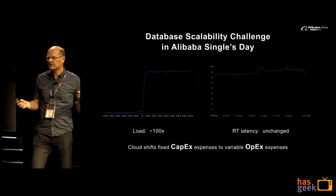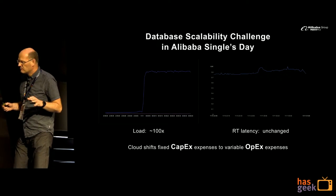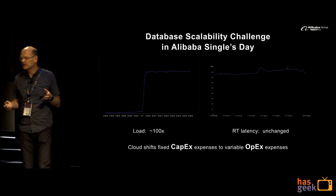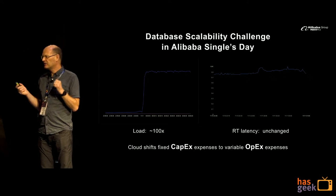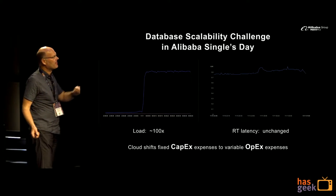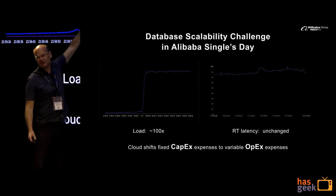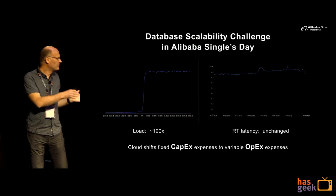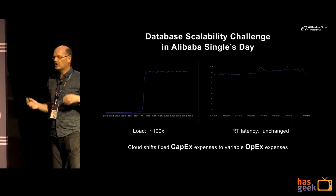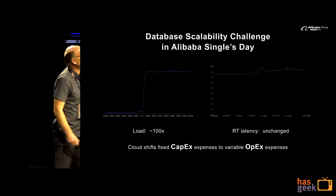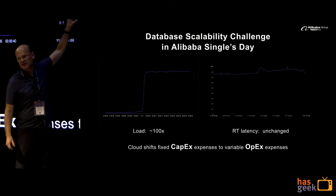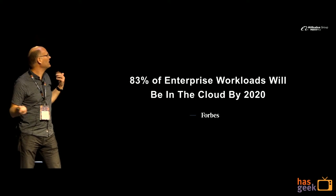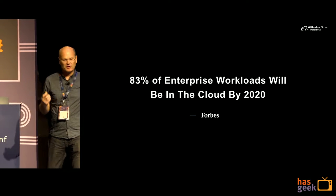One good thing about the cloud is that you don't have to buy all the hardware you need. If you're a Chinese company preparing for November 11, you don't need to buy all the hardware to handle this load. If you use the cloud instead, you move your capital expenses to variable operational expenses, so you can pay for extra compute only when you need it. The forecast says that by 2020, 83% of enterprise workloads will be in the cloud.